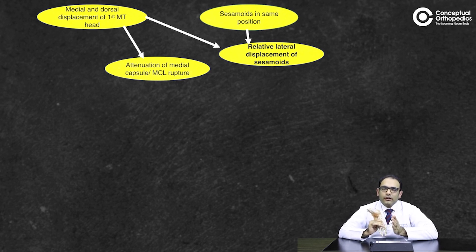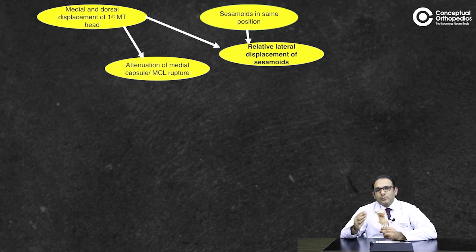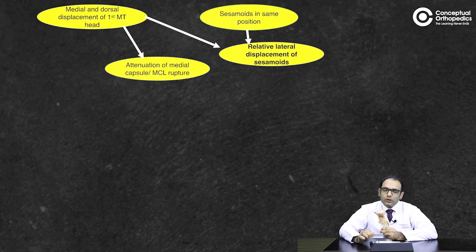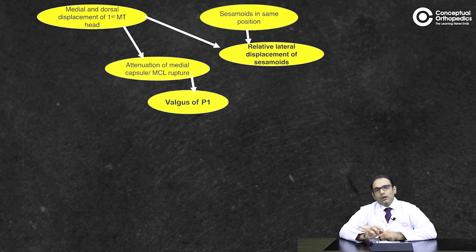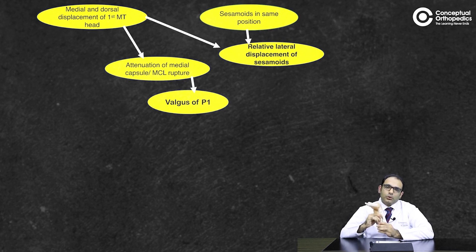As the first metatarsal head displaces medially, there is increased pressure and stress on the medial capsule, which tends to stretch out, leading to attenuation of the medial capsule — what we call MCL rupture. This can itself be a predisposing factor for hallux valgus development. Along with medial capsule attenuation, a valgus deformity develops at the first metatarsal, causing the proximal phalanx to move outward — this is what causes the hallux valgus.